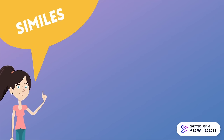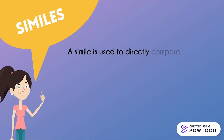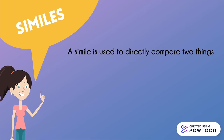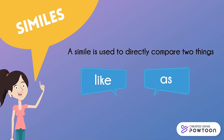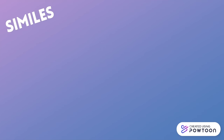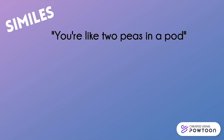A simile is a type of figurative language used to directly compare two things. It is easy to recognise in text as they often use the words 'like' or 'as' to suggest that the objects or ideas are alike. For example, a commonly used simile is 'you're like two peas in a pod.' We can see here the word 'like' is used to make the comparison.